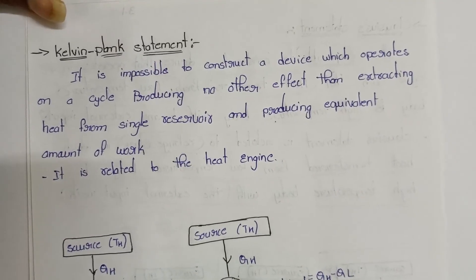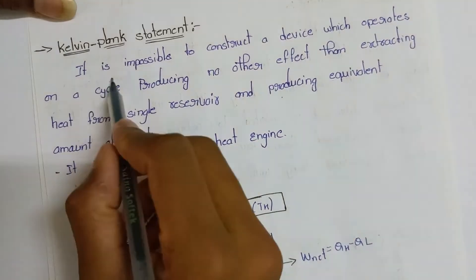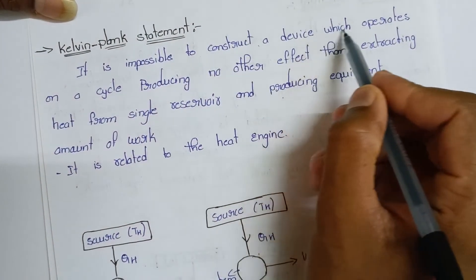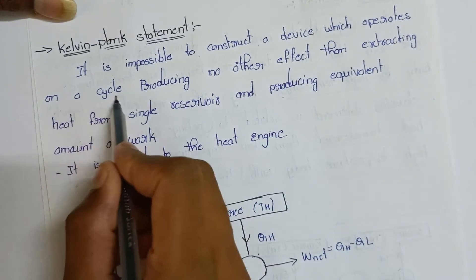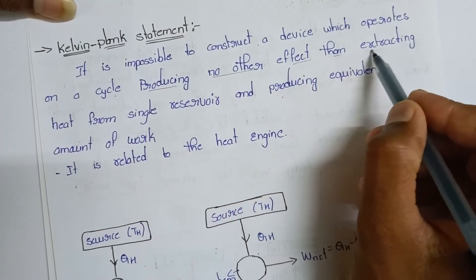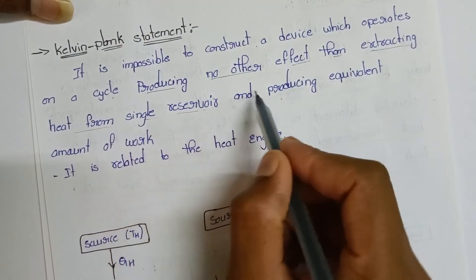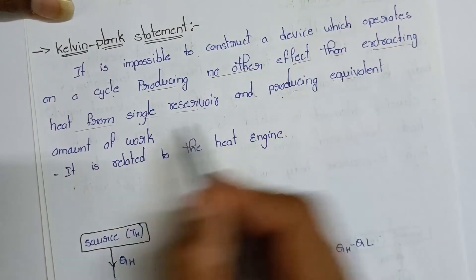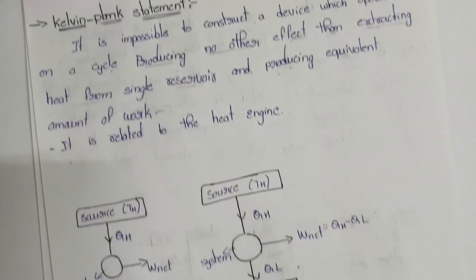The Kelvin-Planck statement says that it is impossible to construct a device which operates on a cycle producing no other effect than extracting heat from a single reservoir and producing an equivalent amount of work.